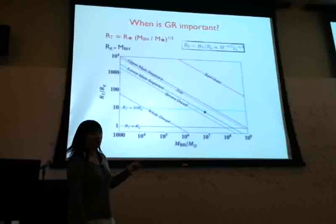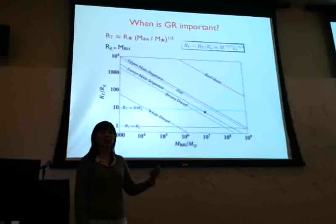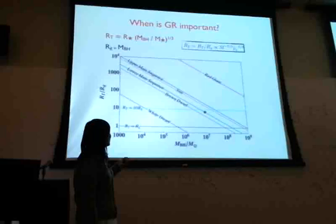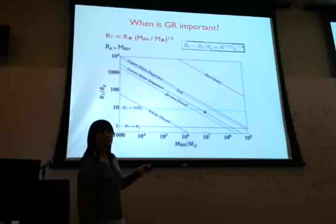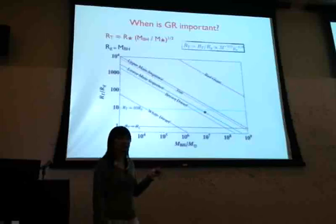We can plot the relative tidal disruption radius for different black hole masses and different types of disrupted stars. For example, white dwarfs will be disrupted by intermediate mass black holes in places where GR is important. Also, for supermassive black holes with mass bigger than 10 million solar masses, the disruption of main sequence stars will happen within 10 to 20 gravitational radii, where GR must be included.